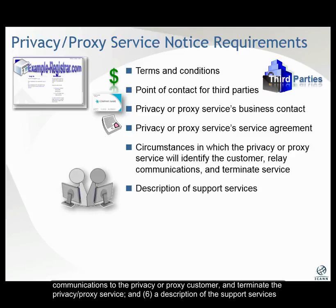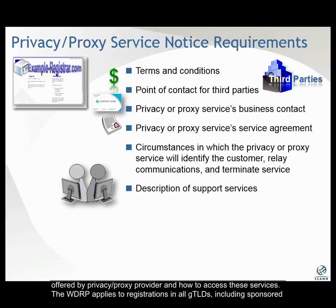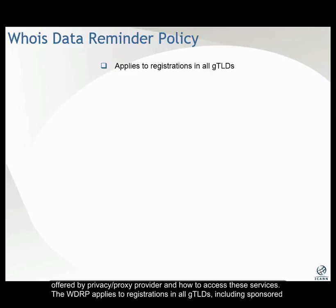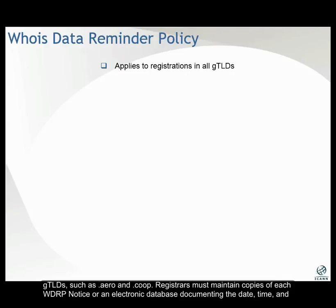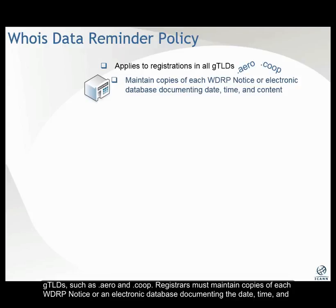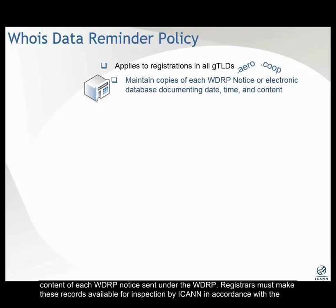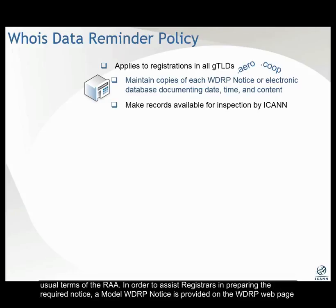A description of the support services offered by the privacy or proxy provider and how to access these services. The WDRP applies to registrations in all gTLDs, including sponsored gTLDs such as .aero and .coop. Registrars must maintain copies of each WDRP notice or an electronic database documenting the date, time, and content of each WDRP notice sent under the WDRP. Registrars must make these records available for inspection by ICANN in accordance with the usual terms of the RAA.